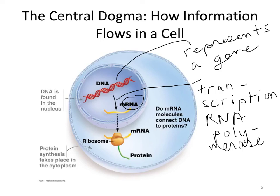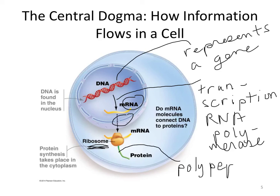That messenger RNA is exported from the nucleus and then reaches an important cellular structure called the ribosome. Ribosomes are made out of protein and ribosomal RNA. The ribosome takes that messenger RNA, basically interprets it, and uses that information to make protein — what actually comes out is a polypeptide, or protein primary sequence.